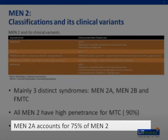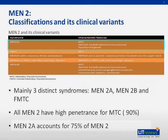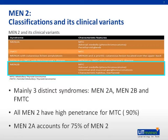MEN2A accounts for 75% of MEN2 and is characterized by MTC, pheochromocytoma, and parathyroid hyperplasia. MEN2B has features of MTC and pheochromocytoma, but not hyperparathyroidism. MEN2B syndrome includes mucosal neuromas, typically involving the lips and tongue, and intestinal ganglioneuromas.